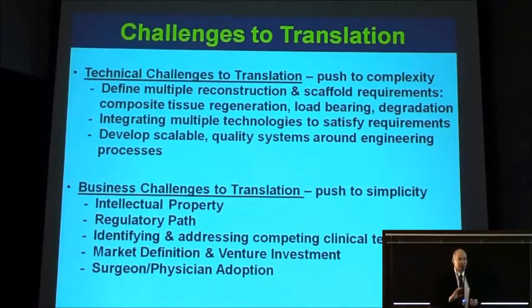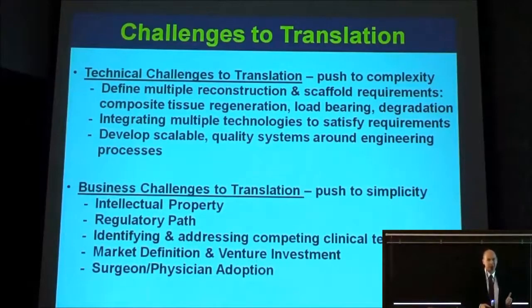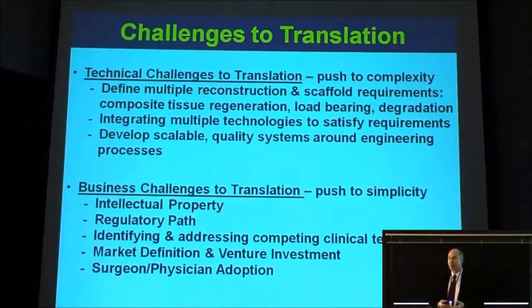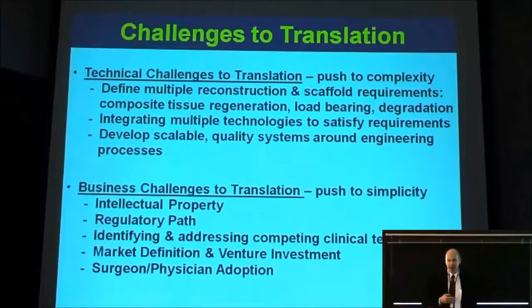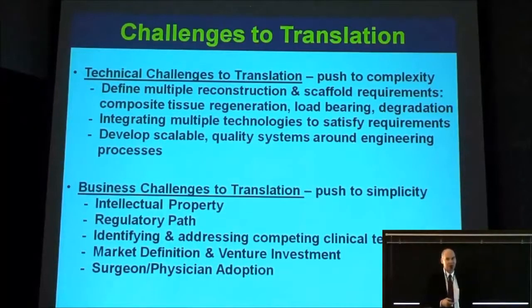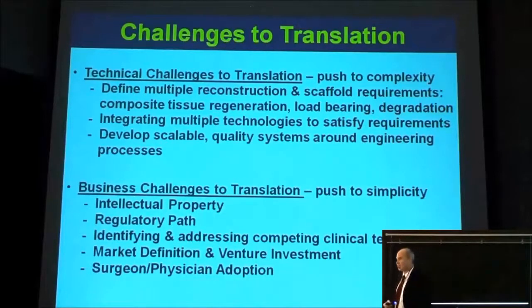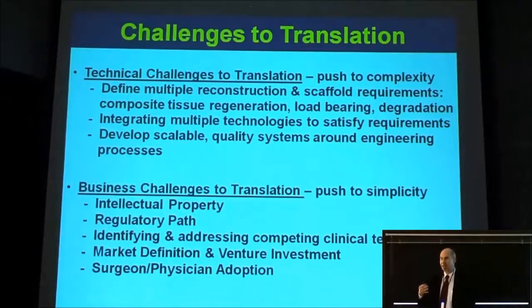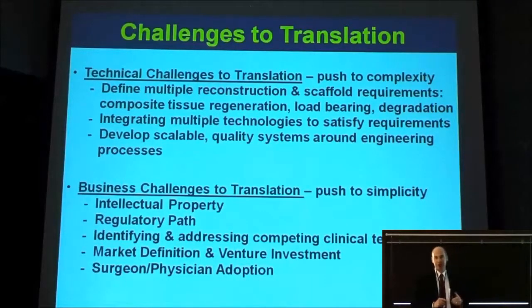When you look at the business challenges, even though technically trying to achieve all these goals will push us towards more complexity, the regulatory and business challenges tend to push us in the opposite way. The more complex you make the technology, the longer it takes to get regulatory approval and the more expensive it is. Also, when you're looking for venture investments — there's no way NIH funding or NSF funding, whether it's R01 grants or SBIRs, is going to fund a therapy all the way into clinical use. So if you're really interested in getting therapies into clinical use, you're going to have to try to get venture funding. Venture capitalists are very skittish when it comes to large clinical trials because it costs a lot of money and there's a lot of risk involved. All of these business challenges tend to push us as developers of tissue engineering therapies to make them simpler.